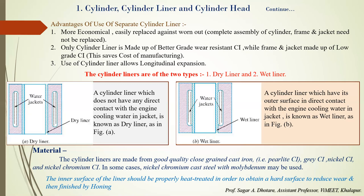Now let's look at the materials used for cylinder liners. The desirable material properties are: the liner material should be strong, hard, corrosion-resistant, and should provide a good bearing surface. Materials used for cylinder liners include grey cast iron, alloy cast iron containing nickel and chromium, and nickel-chromium-molybdenum cast steels. The cylinder liners are heat treated from the inside and then finished by a honing operation.